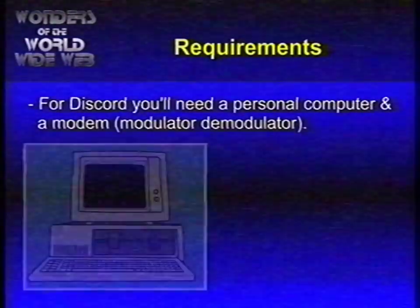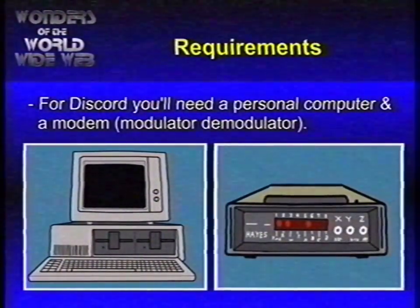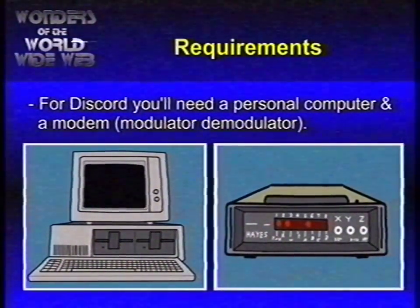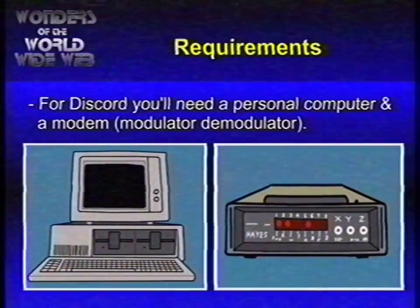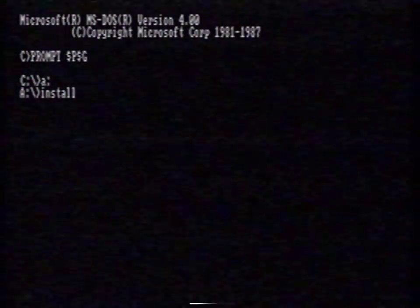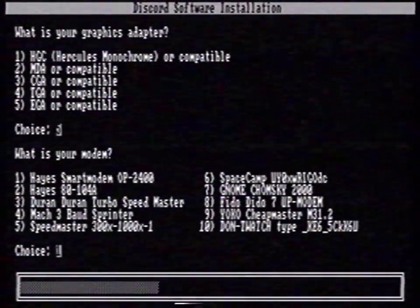For Discord, you'll need a personal computer and a modem, which stands for modulator demodulator. But how does it work? It's easy. First, we need to install Discord. Just type install and it will install Discord on your computer's hard disk. Be sure to select the right modem.